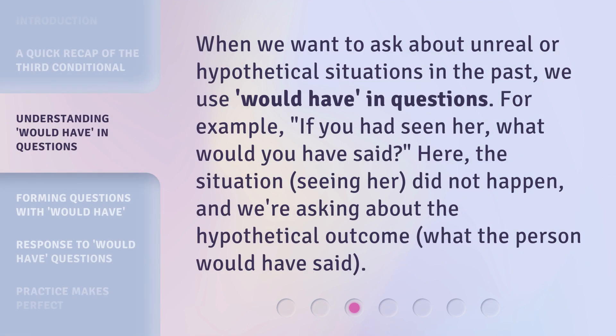When we want to ask about unreal or hypothetical situations in the past, we use 'would have' in questions. For example: 'If you had seen her, what would you have said?' Here, the situation — seeing her — did not happen, and we're asking about the hypothetical outcome: what the person would have said.